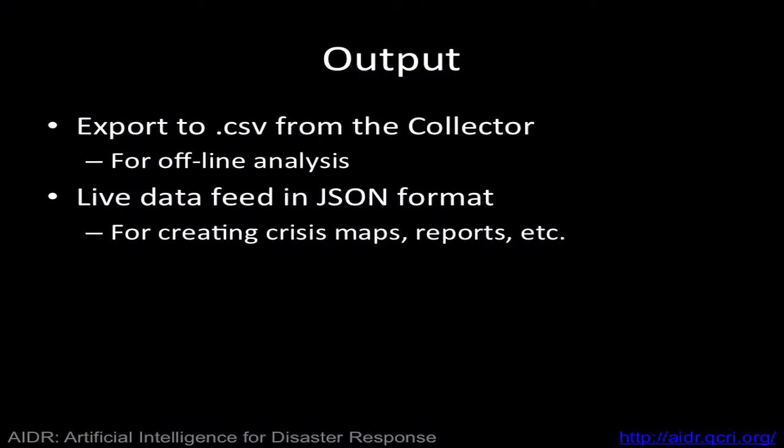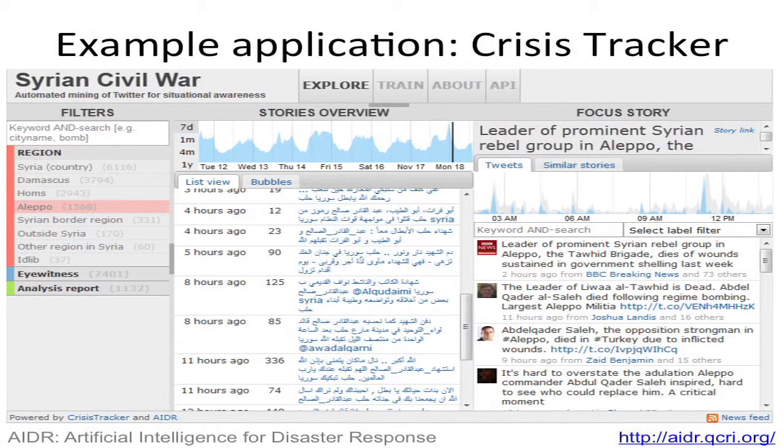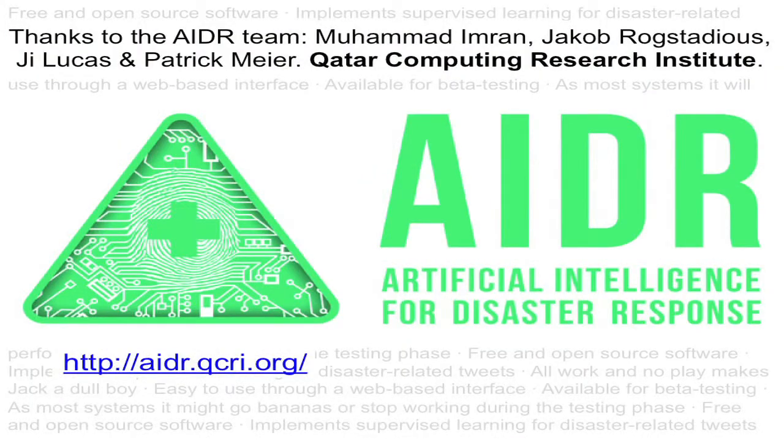The output you can export in CSV, either from the collector or the tagger, but more importantly you can subscribe to a live data feed — which is like a data feed from Twitter but with extra annotations — and you can use them for maps, for reports, or for whatever you want. This is one application we built to demonstrate that we can use the output of AIDER. It's multilingual in Arabic and English, and it classified tweets related to Syria using AIDER, displaying clusters of tweets, time series, etc. Find me and I will be happy to do a demonstration for you.